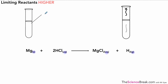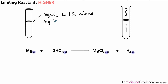In our first scenario, at the end of the experiment we're going to have some magnesium chloride, which is the product, and we're going to have hydrochloric acid left over as well. Those two will be mixed together — both in solution — and all the magnesium is gone. So we know that magnesium is the limiting reactant; it's the one that's been used up, and the hydrochloric acid is the one that was in excess.